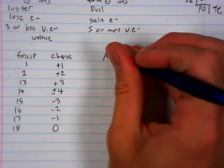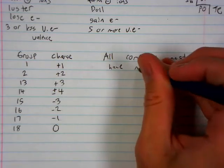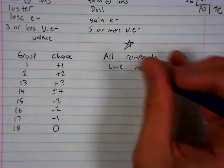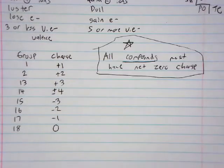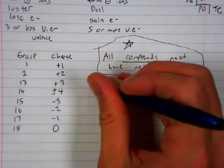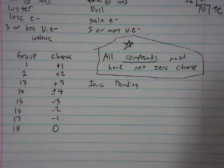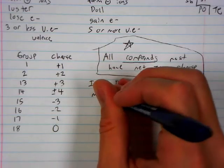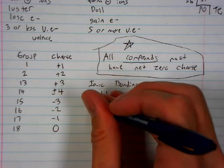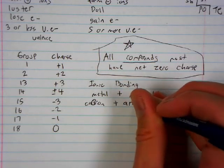Why are charges important? Well, because to form a compound, all compounds must have net zero charge. This is how you determine how to make a good compound. And the first type of bonding we usually learn is ionic bonding. Ionic bonding is a metal plus a non-metal, or a cation plus an anion.